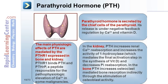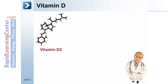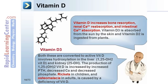In the kidney, PTH increases renal calcium reabsorption and increases the activity of 1-hydroxylase, which mediates the final activation step in the synthesis of vitamin D, and also decreases phosphate reabsorption. In the bone, PTH increases osteoclast-mediated bone resorption indirectly through the stimulation of osteoblast activity. Vitamin D increases bone resorption, renal calcium reabsorption, and intestinal calcium absorption.